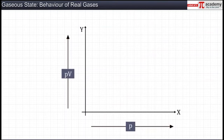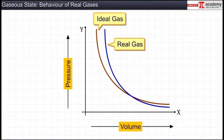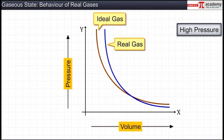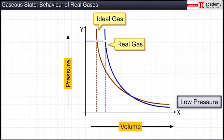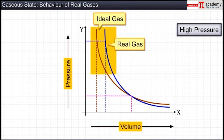Let us observe the nature of the graph obtained for a real gas in a pressure versus volume plot. It is clear from the graph that at very high pressure, the volume occupied by a real gas is more than the volume occupied by an ideal gas. At very low pressure, the volumes occupied by both a real and an ideal gas are almost the same. Hence, at high pressure, these gases significantly deviate from ideal gas behavior.